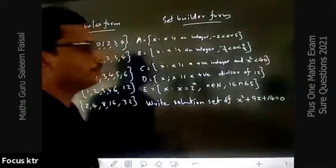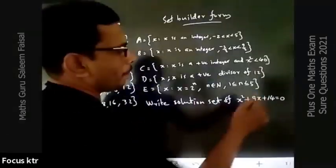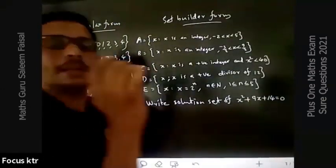Write the solution set of this equation: x² + 9x + 14 = 0.